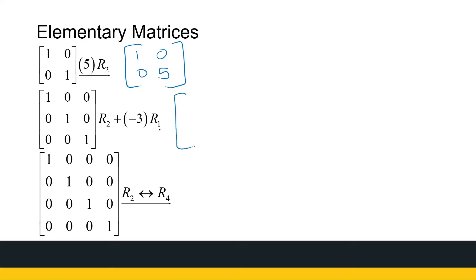Next example: row two plus minus three times row one. So row one stays the same, row three stays the same, but I take row two and add minus three times row one, giving row two as [−3, 1, 0]. Another elementary matrix.